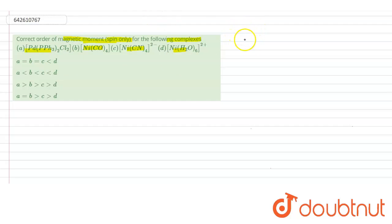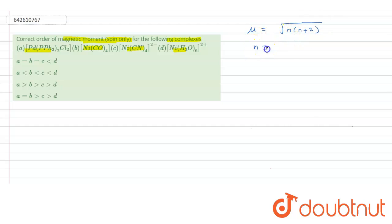We have four complexes and we have to calculate the magnetic moment. The magnetic moment is denoted by mu and its formula is μ = √(n(n+2)), where n is equal to the number of unpaired electrons.